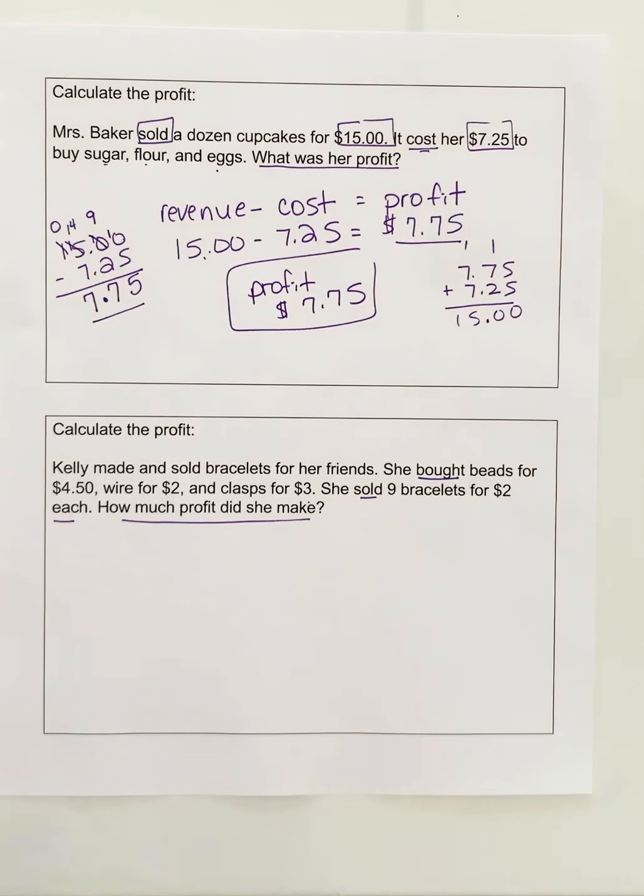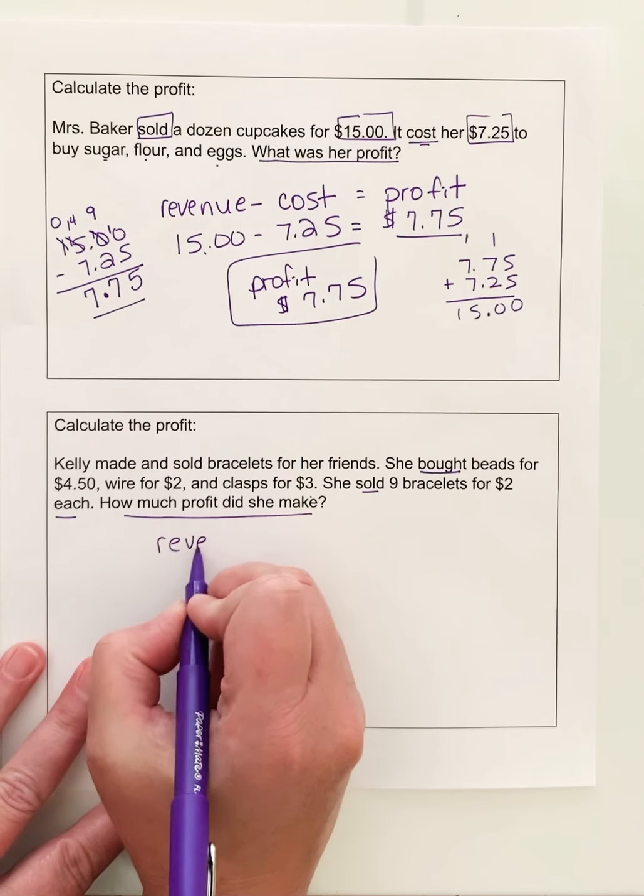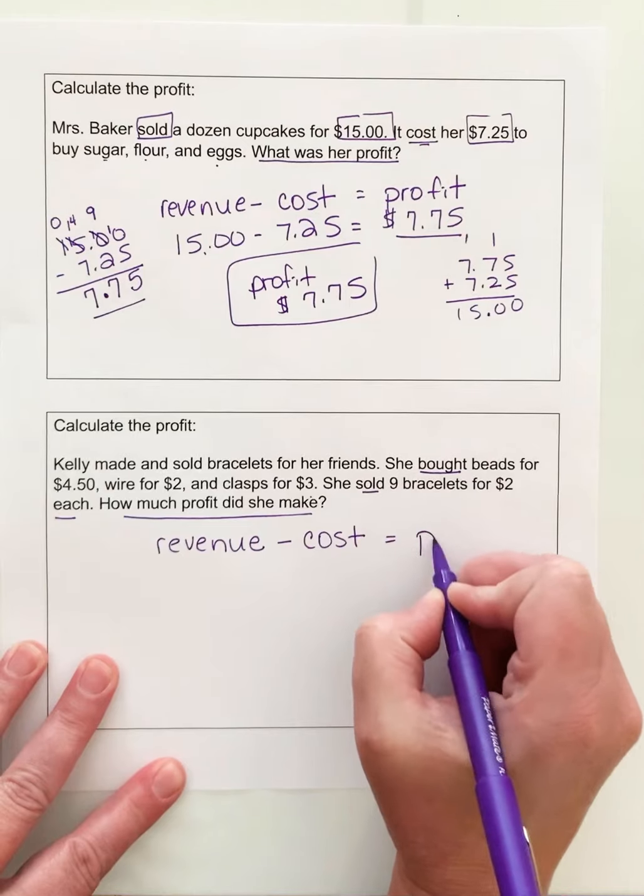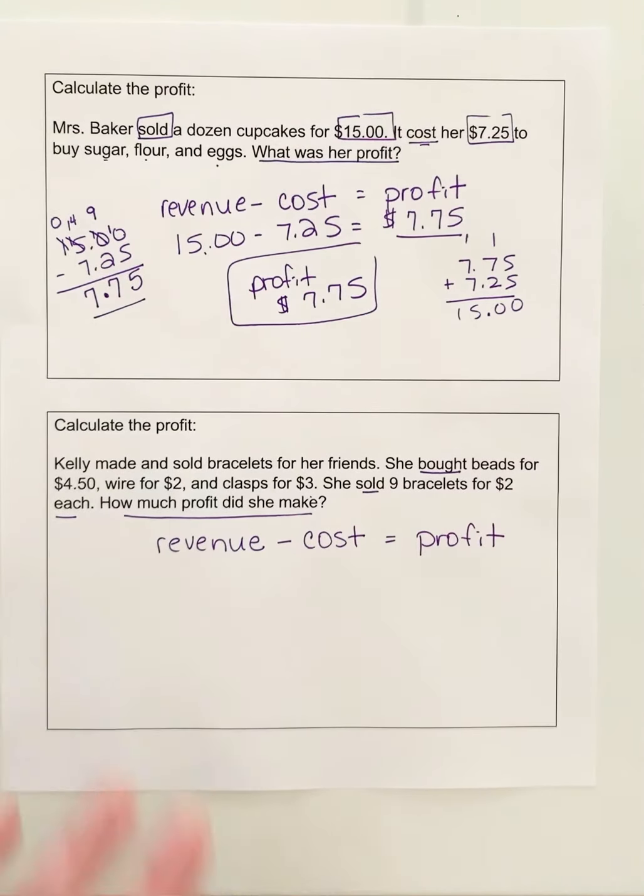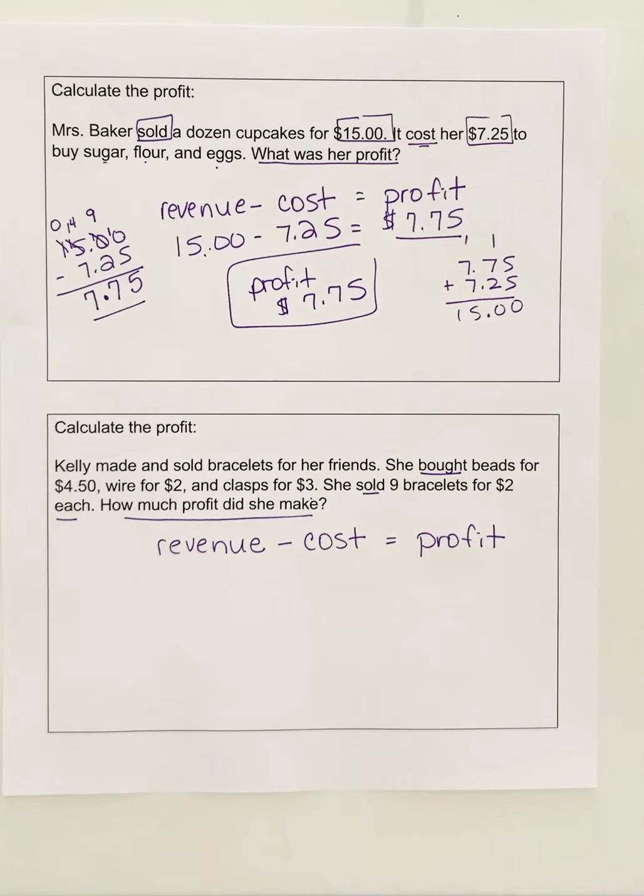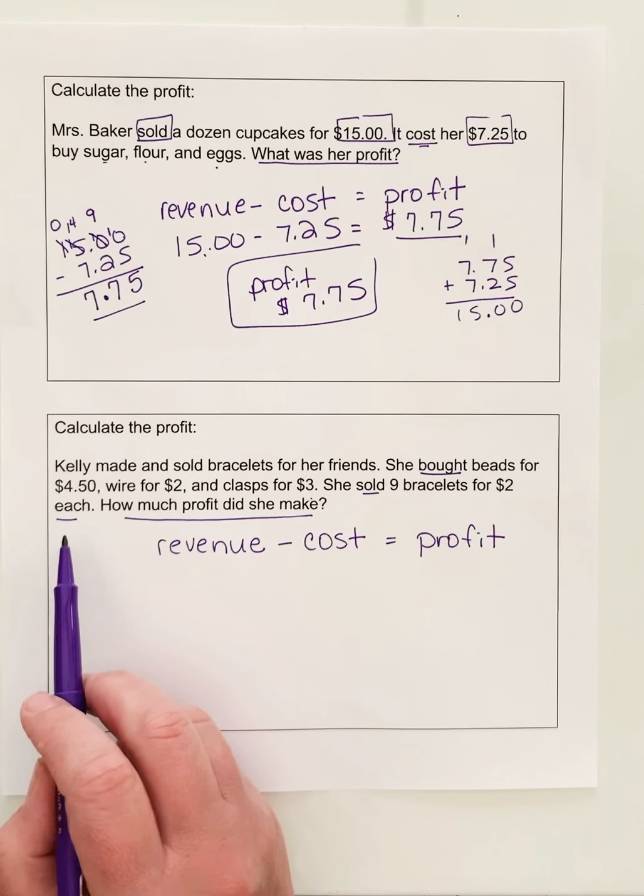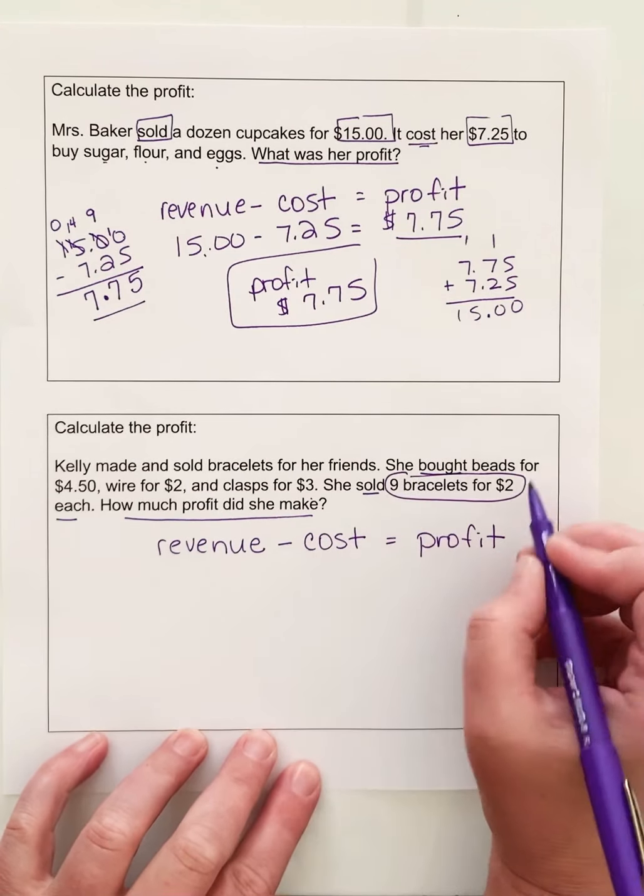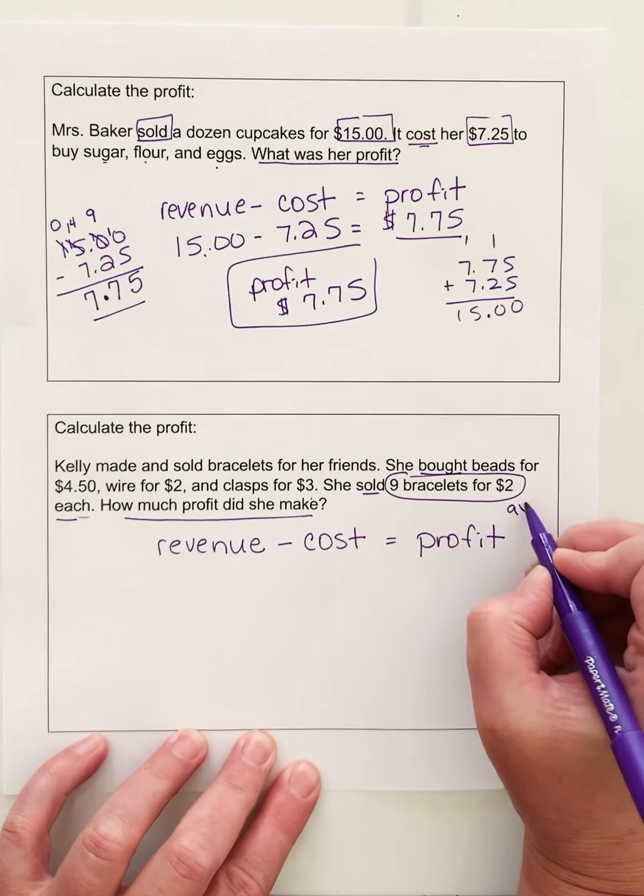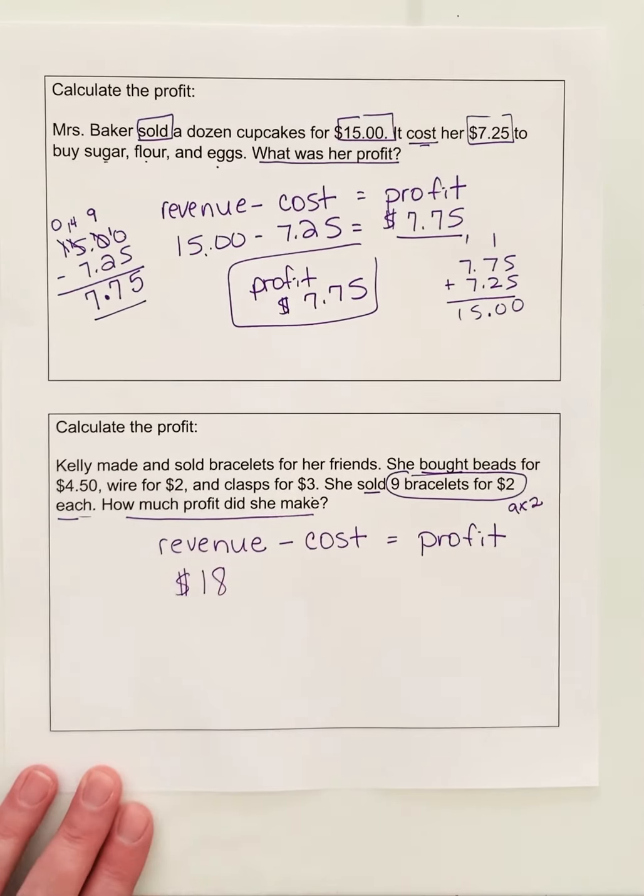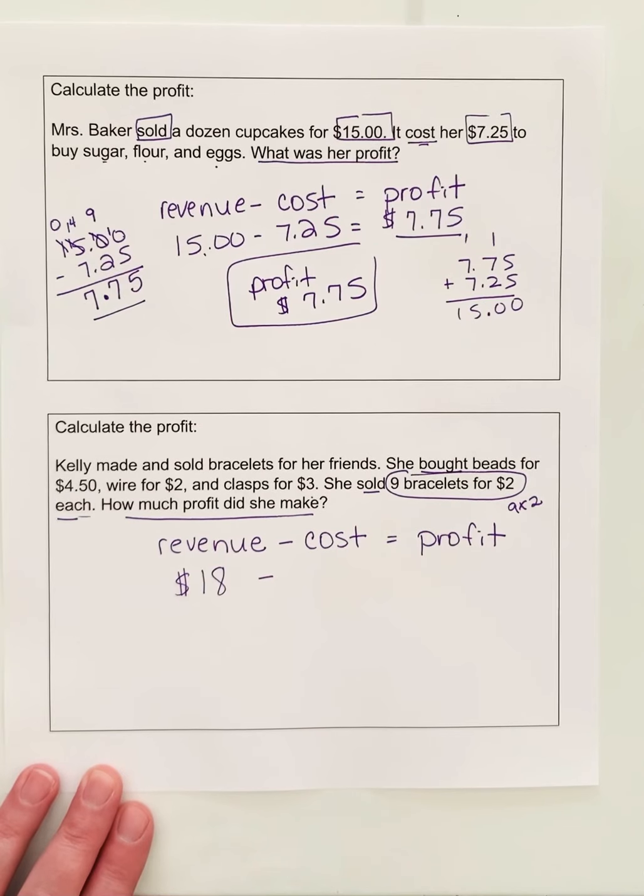So to calculate this one, I'm going to start with writing your formula. Revenue or your income minus your costs equals your profit. So let's figure out what our numbers are. Our revenue is how much money she made. Now, I'm looking here, and I don't see an exact amount, but I do have some clues. It says she sold 9 for $2 each. So I'm going to have to do something here. 9 bracelets for $2 each tells me multiply what is 9 times 2. That is $18. So she earned $18 selling bracelets, but before she could make those bracelets, she had to spend some money.